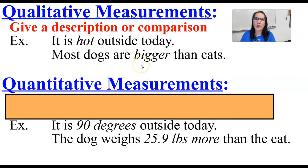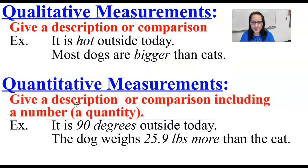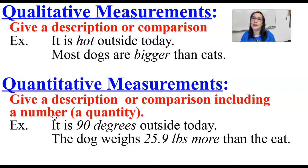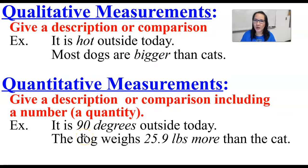Think of the quality of the measurement. Then there's the quantitative measurement, and that's going to involve numbers. It gives a description or comparison including a number or a quantity — hence quantitative measurement. For example, it is 90 degrees outside today, or the dog weighs 25.9 pounds more than the cat.